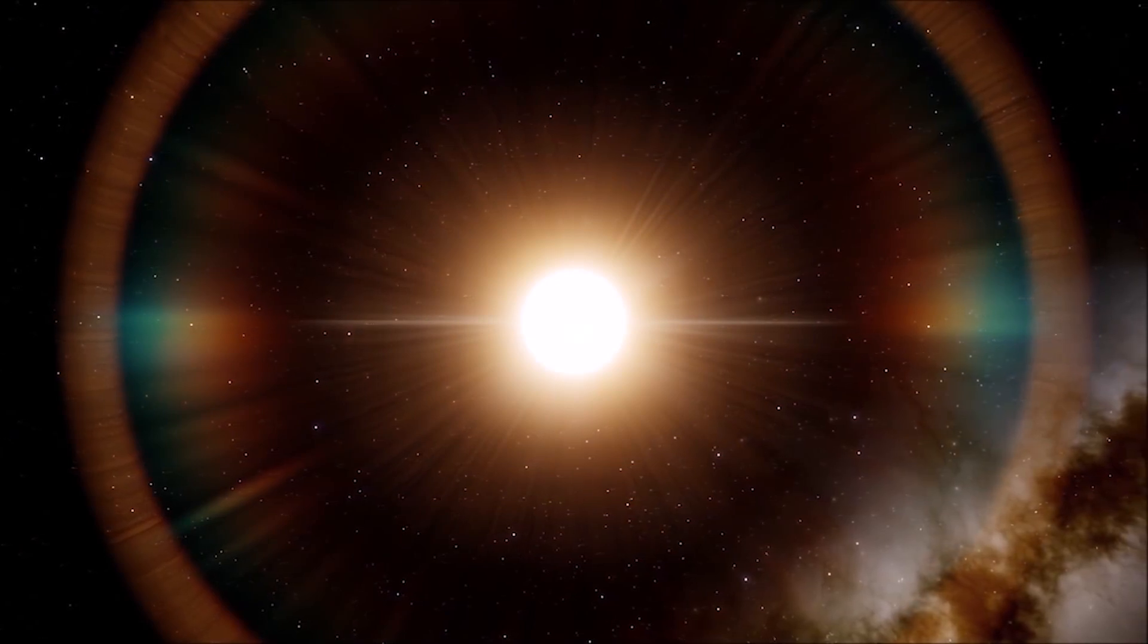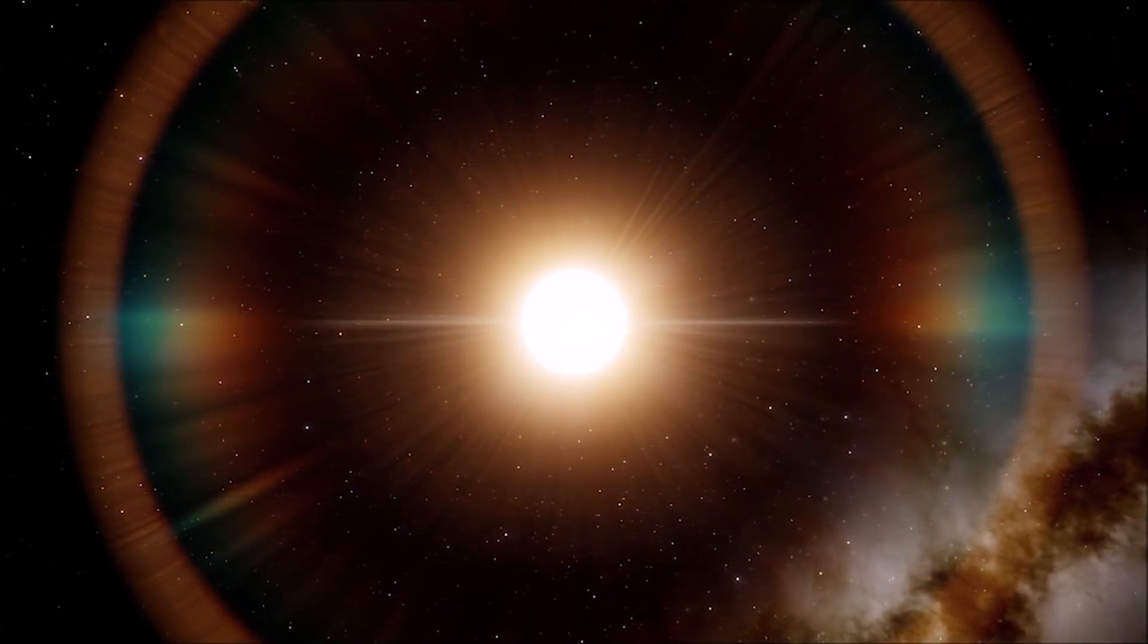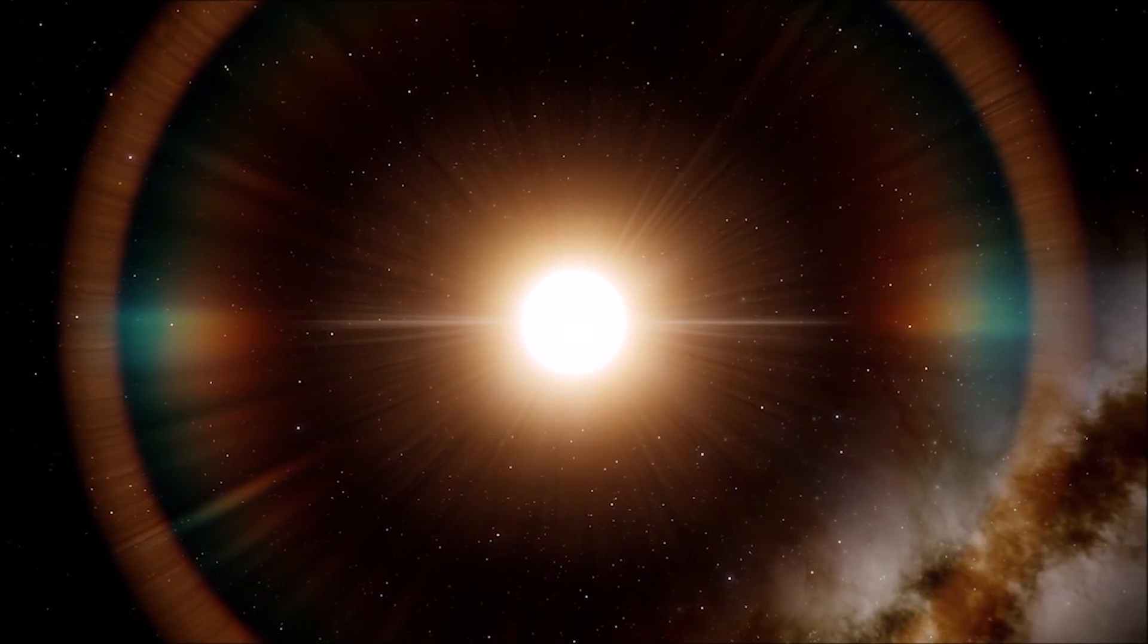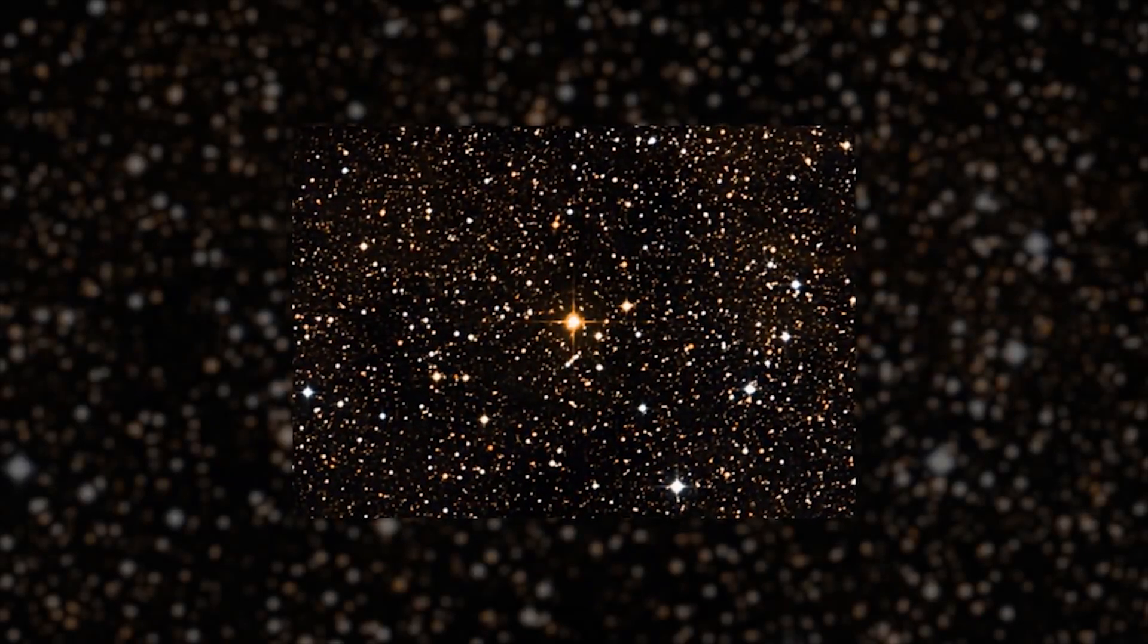This massive size is a result of the star's evolutionary path. As a star consumes its nuclear fuel over time, it expands and evolves into a red supergiant, reaching astonishing proportions. Stevenson 2-18 is a prime example of this phenomenon, showcasing the extreme end of stellar dimensions.